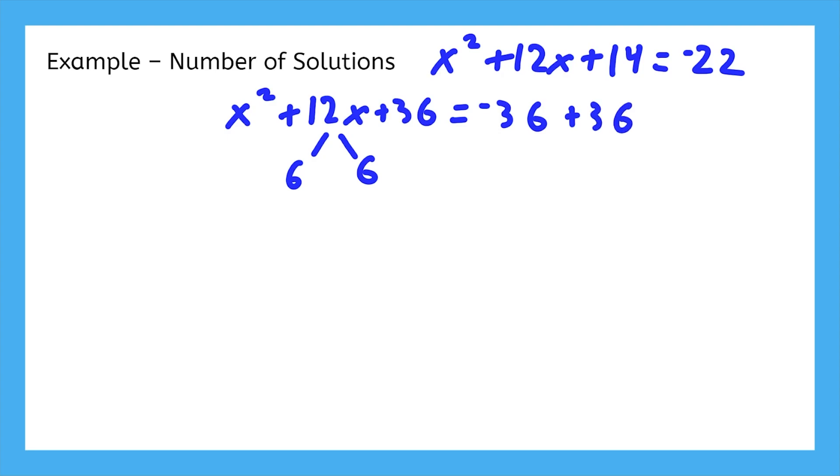Now that the square on the left side has been completed, we can factor it into x plus 6 squared, and negative 36 plus 36 is 0. Right here is how we can tell how many solutions there are. If we cancel the square with a square root, the square root of 0 is just 0.